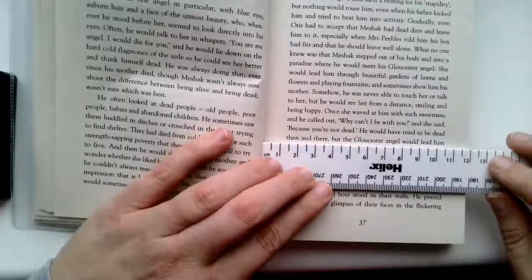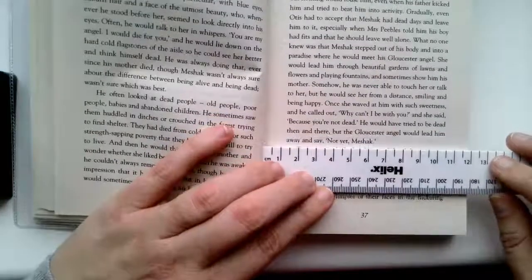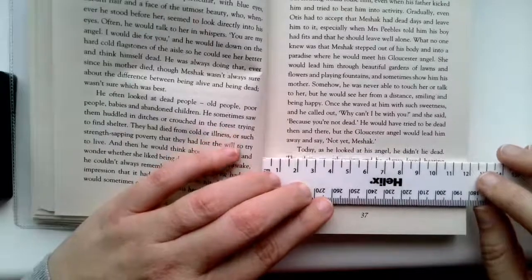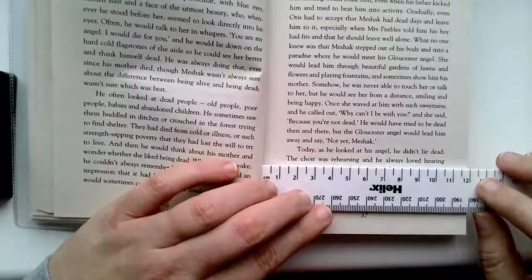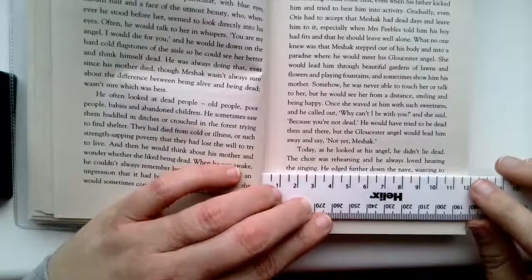He would have tried to be dead then and there, but the Gloucester angel would lead him away and say, Not yet, Meshach. Today, as he looked at his angel, he didn't lie dead. The choir was rehearsing, and he always loved hearing the singing.